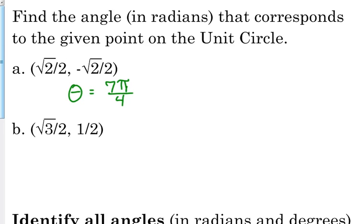Positive square root of 3 over 2, positive 1 half. So positive, positive, first quadrant. Bigger x, so that's 30 degrees, or π over 6. They wanted it in radians, so I'm going to put π over 6.